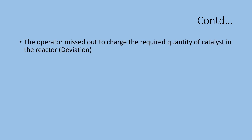The operator missed out to charge the required quantity of catalyst in the reactor. This is a clear deviation. Here, you have to look into all potential whys until you get the root cause. For example: how the catalyst was staged, how it was labeled, whether or not it was available near the reactor, what are the potential reasons for missing out, and whether there is a provision in the SOP to charge catalyst or if it happens by practice as an implied requirement of the procedure. All this has to be looked into. If everything is okay and it is found that the operator does not know how to do that, then training should be imparted.